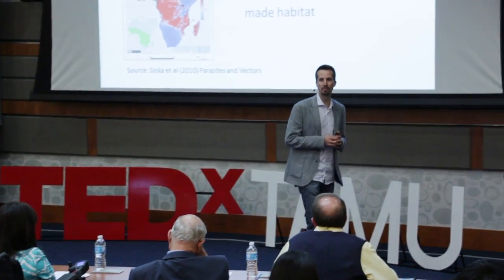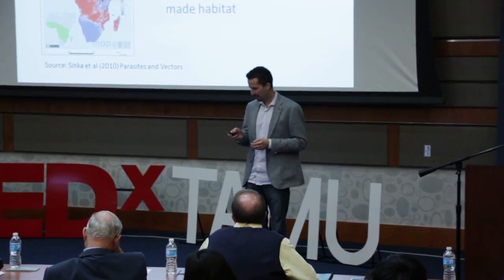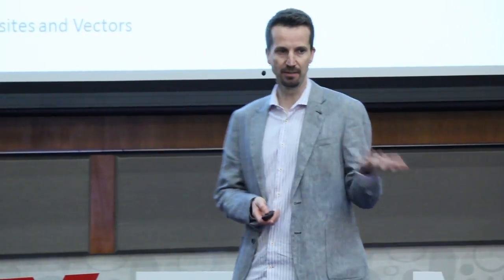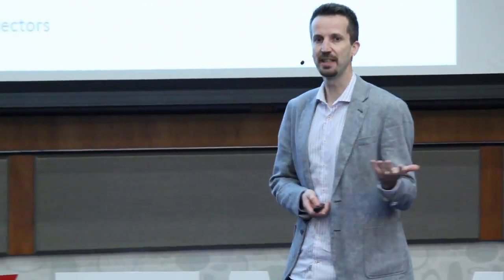But there's another reason. Africa also happens to be home to many highly effective malaria mosquitoes. Here we're looking at one called Anopheles gambiae, the most important malaria mosquito in Africa and in the world. This is the most dangerous animal species on the planet — not a single other animal causes as much misery and suffering to humankind. It's highly adapted to humans, breeds in close proximity to humans, and really likes to take its blood meals from humans.